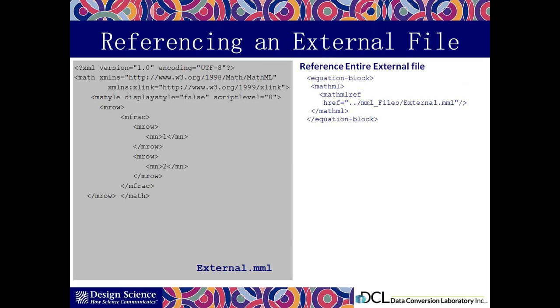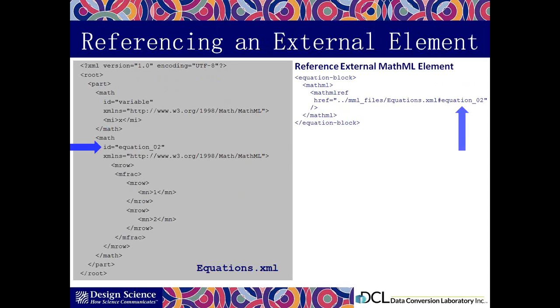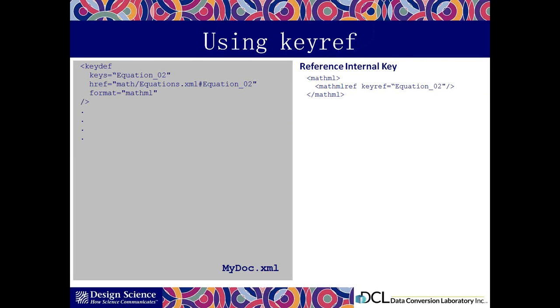Along with recognizing MathML as a valid tag, we also have a few ways to reference external math elements. The first is to reference an entire document. On the left, we have my external .mml file. On the right, I have a sample equation block that I would use to add an equation to my DITA document. To add the reference, you can see I've added the MathML ref tag inside my MathML block. In the next example, I show how to reference a particular element in an external file. If I wanted to put my references at the top of the document that I was working on, and then call that reference within the document, I might use a key rep. It's relatively straightforward. You can see the syntax for it here.